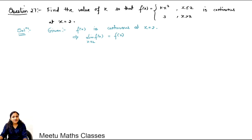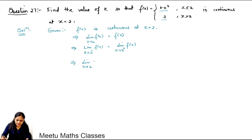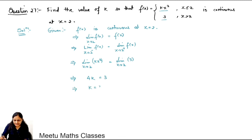Since the function definition differs to the left and right of 2, the limiting value exists when the left hand limit equals the right hand limit. To the left of 2 the function is kx², and to the right it is 3. By direct substitution, the left hand limit gives 4k and the right hand limit gives 3.